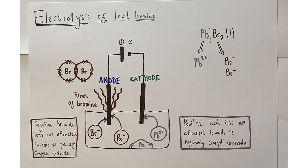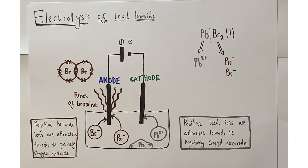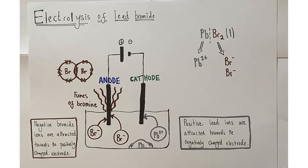The simple example of electrolysis here is the electrolysis of molten lead bromide. The formula of the ionic compound lead bromide is written with (l) for liquid, because we've melted it. When we melt the solid giant ionic lead bromide structure, it breaks the ionic bonds — the strong electrostatic forces of attraction between the positive and negative ions — releasing them, making them free-moving so they can migrate towards the electrodes.